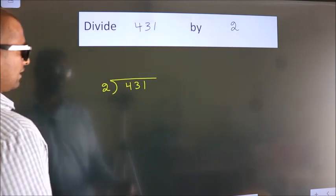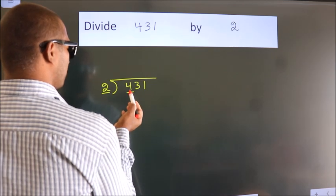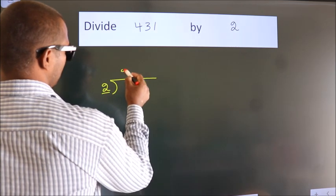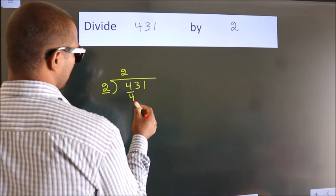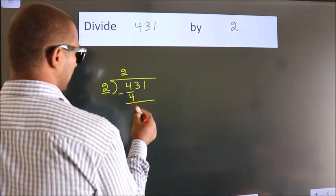Next. Here we have 4, here 2. When do we get 4? In 2 table, 2 2s, 4. Now, we should subtract. We get 0.